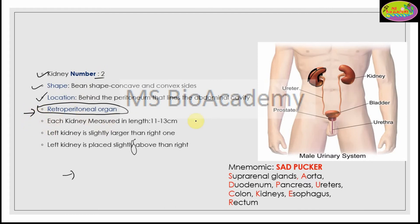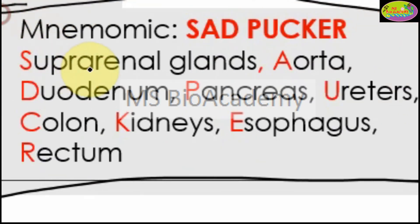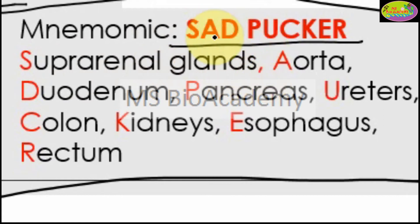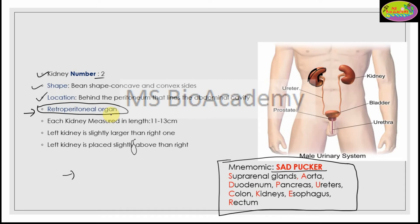Apart from the kidney, there are other retroperitoneal organs in our body. To memorize them, here is a mnemonic: SAD PUCKER — S for Suprarenal glands, A for Aorta, D for Duodenum, P for Pancreas, U for Ureter, C for Colon, K for Kidney, E for Esophagus, R for Rectum. This helps you quickly identify retroperitoneal organs in exam questions.